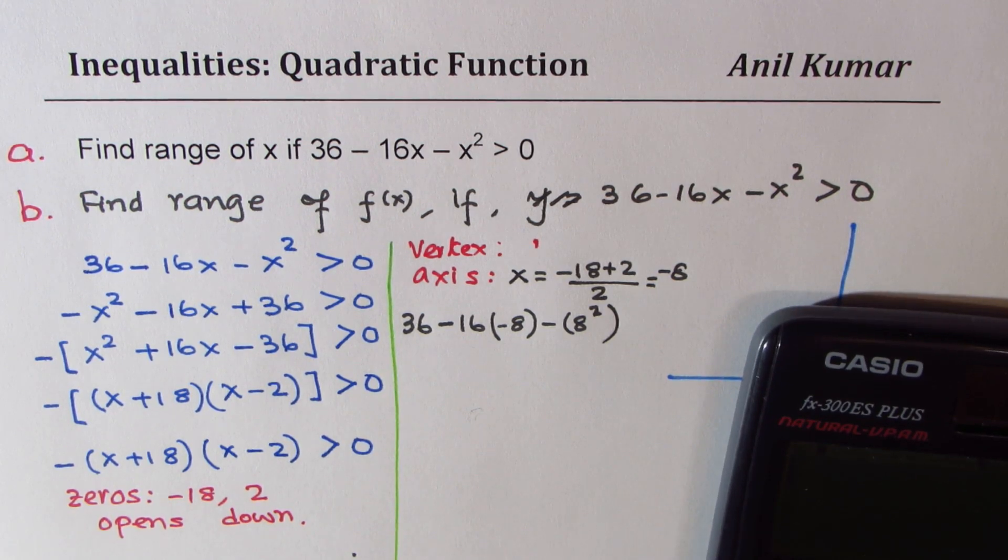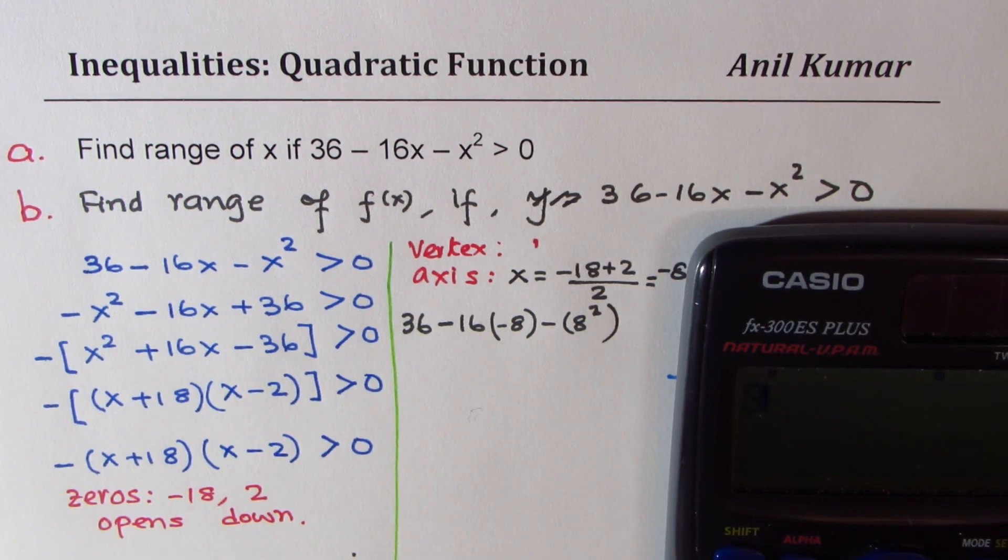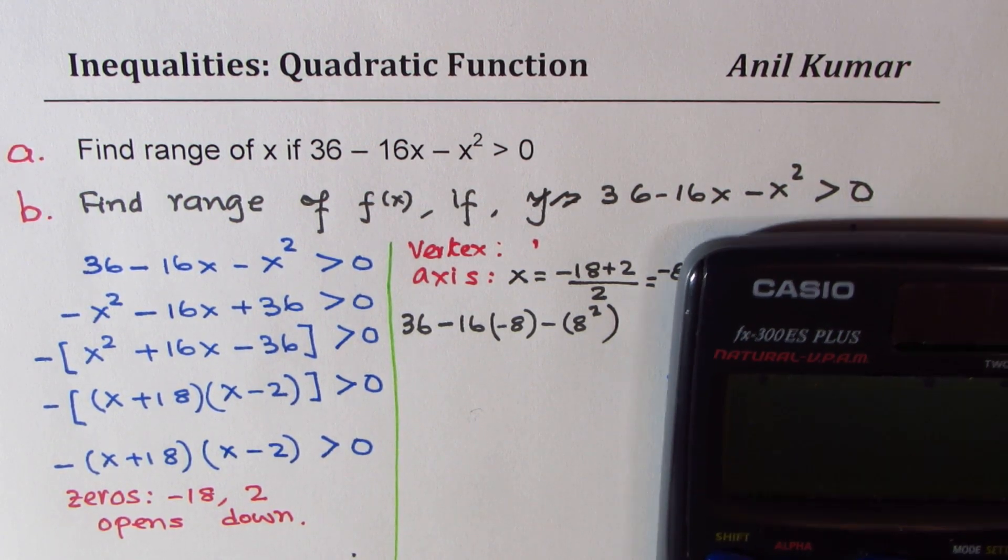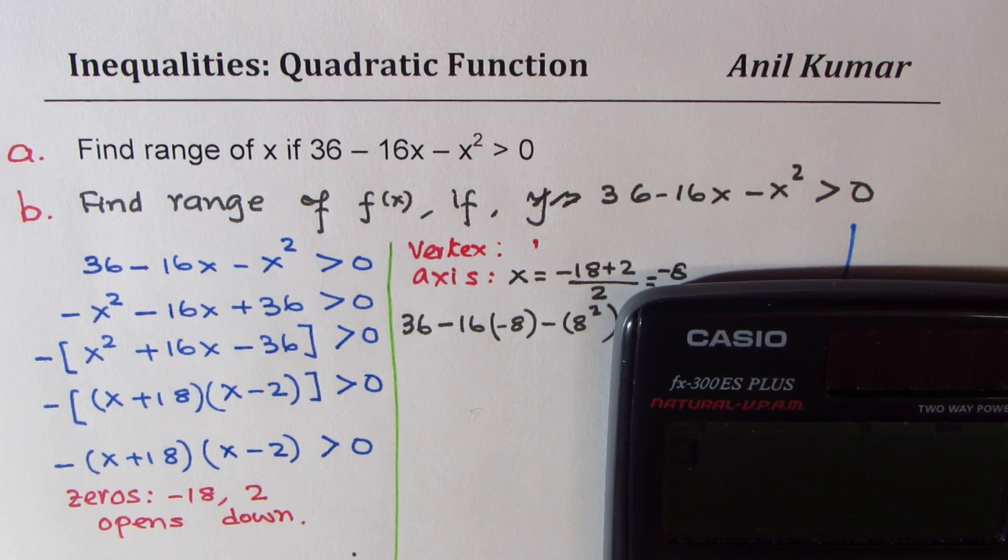It is 36, that minus minus becomes positive, 16 times 8 minus 8 squared, which is 64. Something wrong in the calculations. Let's redo. 36 minus 16... okay, so let's do these calculations.